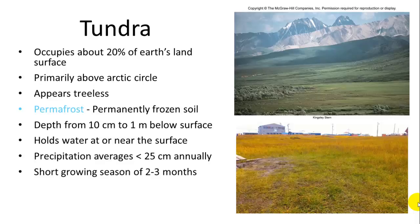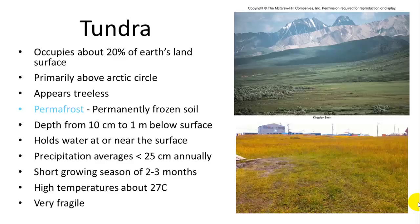The growing season is short, only two to three months, because of fluctuations in daylight and temperature. High temperatures are about 27 degrees Celsius — roughly 75 to 80 degrees Fahrenheit — though it generally stays much cooler in summer, around 50 to 60 degrees Fahrenheit. In winter it can get down to negative 40 or colder with wind chill. This is a very fragile ecosystem, and it is one of the ecosystems under threat with global warming, because if the permafrost melts the whole ecosystem will change.